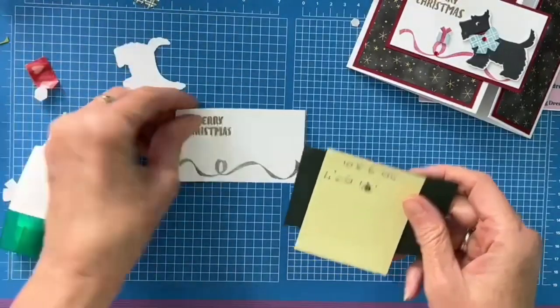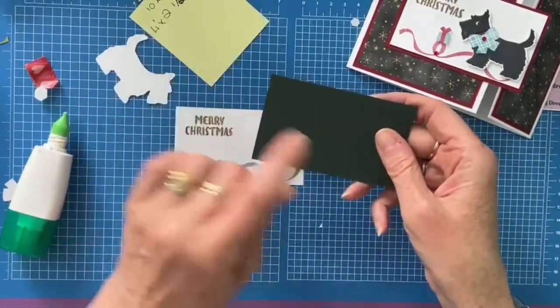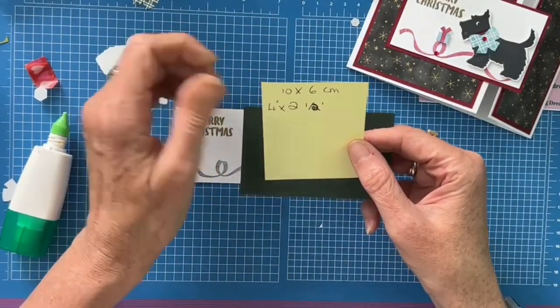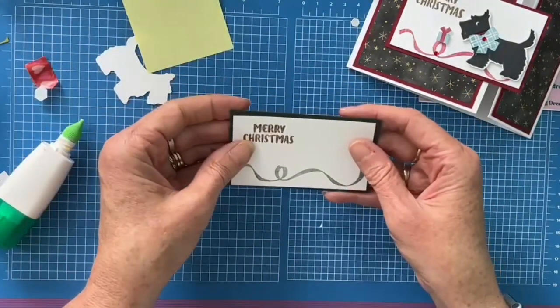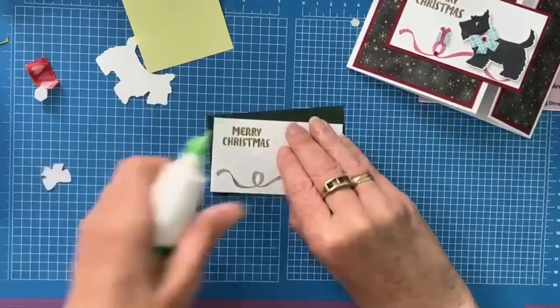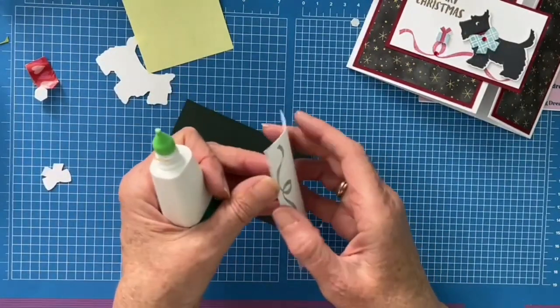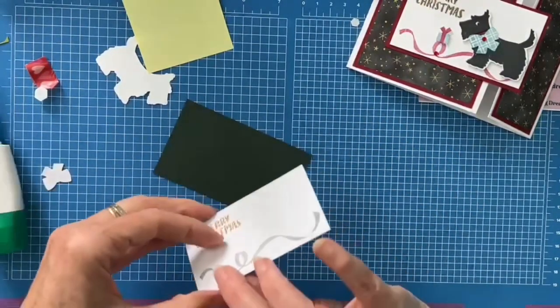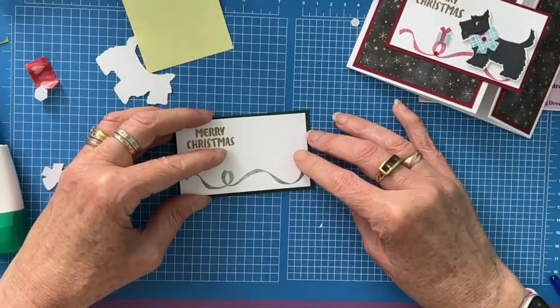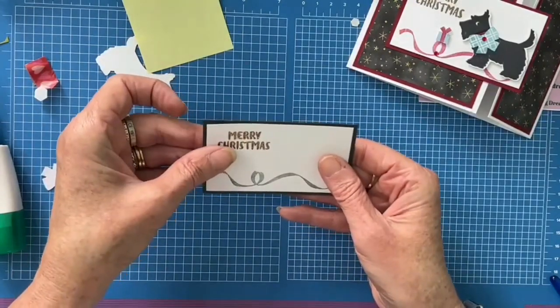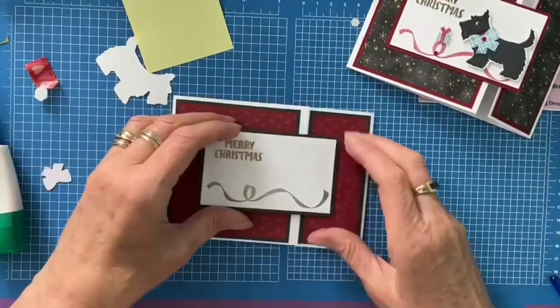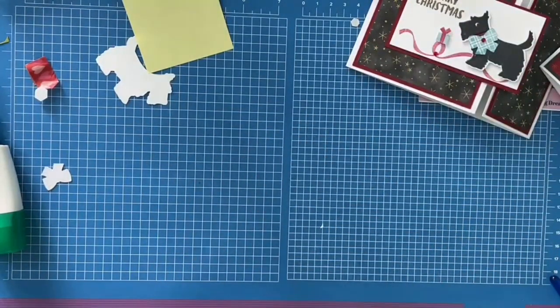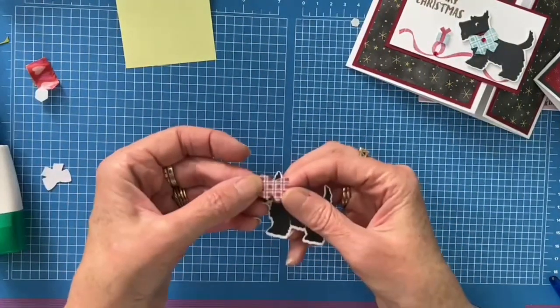Then we need to mount our card onto a piece of Evening Evergreen. And that's ten by six centimeters by four inches by two and a half inches. So that can go on like that. And actually, I think I might redo the bow and have it red. I don't think there's much red on the front of the card. So let me just do that and I'll be back in a minute. And there you go. There's the red.